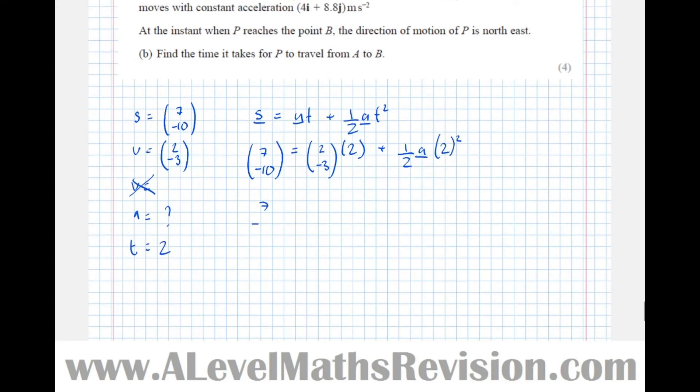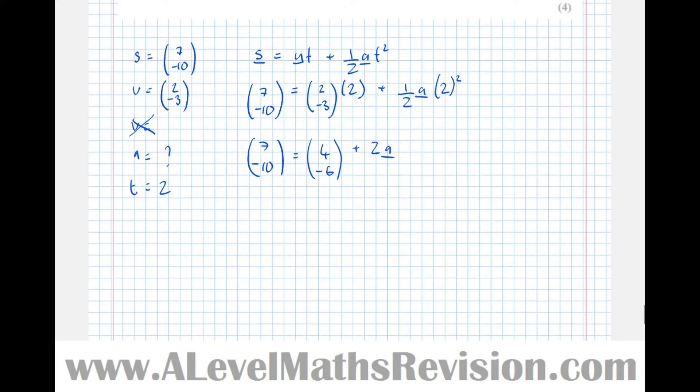So 7 minus 10 equals 2 minus 3 times the scalar 2, which makes it 4 minus 6, plus a half of 2 squared, which is 2A.